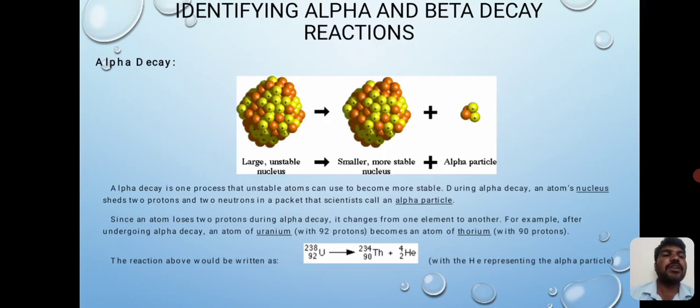Identification of alpha and beta decay reactions. Alpha decay is one process that unstable atoms can use to become more stable. During alpha decay, an atom's nucleus sheds two protons and two neutrons in a packet called an alpha particle. Since an atom loses two protons during alpha decay, it changes from one element to another.